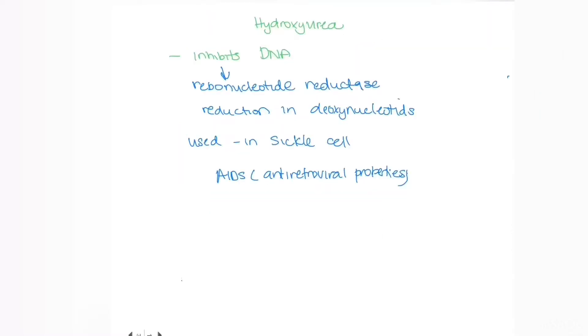The next drug is called hydroxyurea. It's also an inhibitor of DNA by inhibiting ribonucleotide reductase, which is used in the formation of deoxynucleotides. It's used to treat sickle cell, especially people in pain, and also HIV.